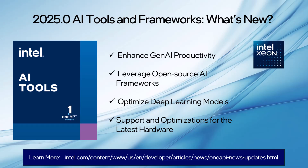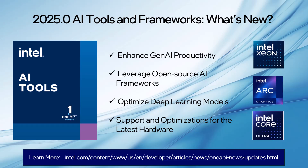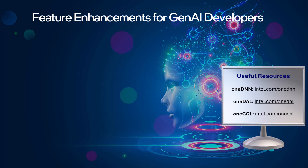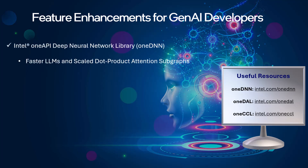The new release supports open standards and optimizations on the latest hardware, including Intel Xeon 6 processor with P cores, Intel Arc B-series graphics, Intel GPUs, and built-in accelerators. Our AI, data science, and data analytics focused OneAPI libraries now come with exciting new features for Gen AI developers. The OneDNN library now enables optimizations and faster performance of large language models or LLMs and directed acyclic graphs on the latest Intel platforms.